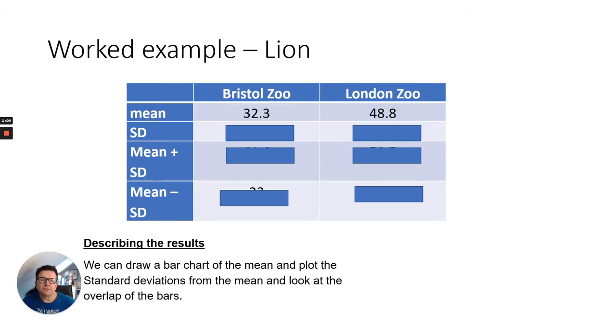So maybe you've gone away and hopefully you've worked out the results, but I'll show you the mean for each. So first of all, Bristol Zoo and London Zoo, you can see the mean age of lions looks very, very different. So if you only look at the mean, you'd think, well, yeah, there is definitely a difference between the two sets of data. But we need to also look at the standard deviations.